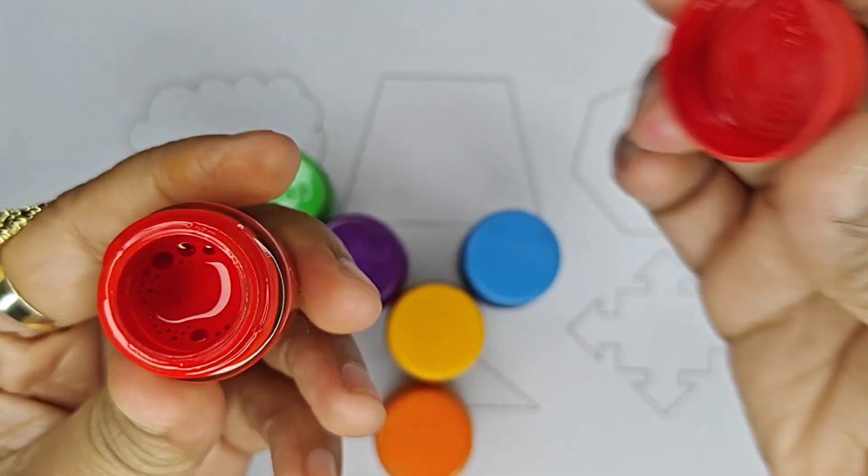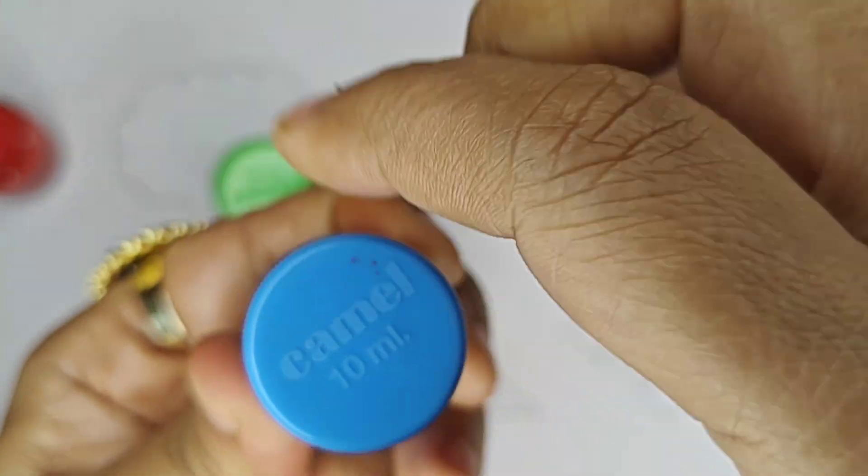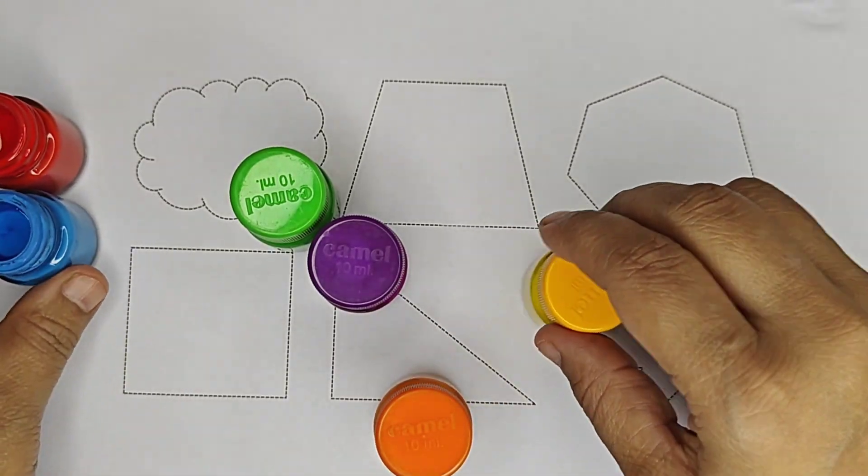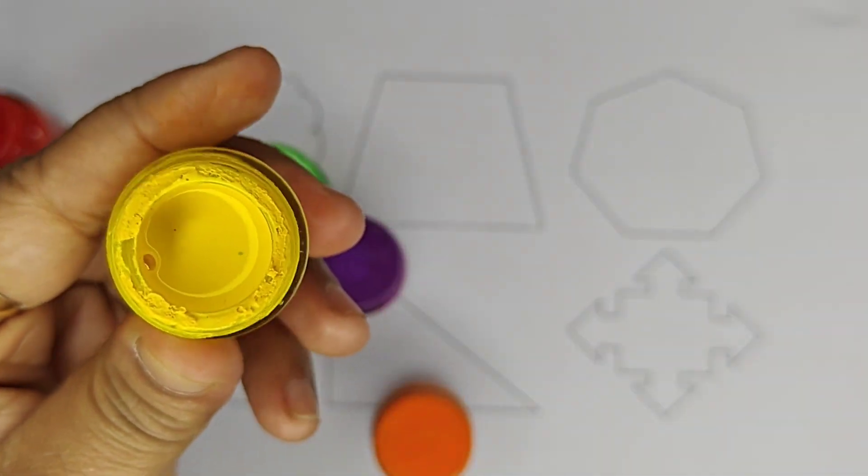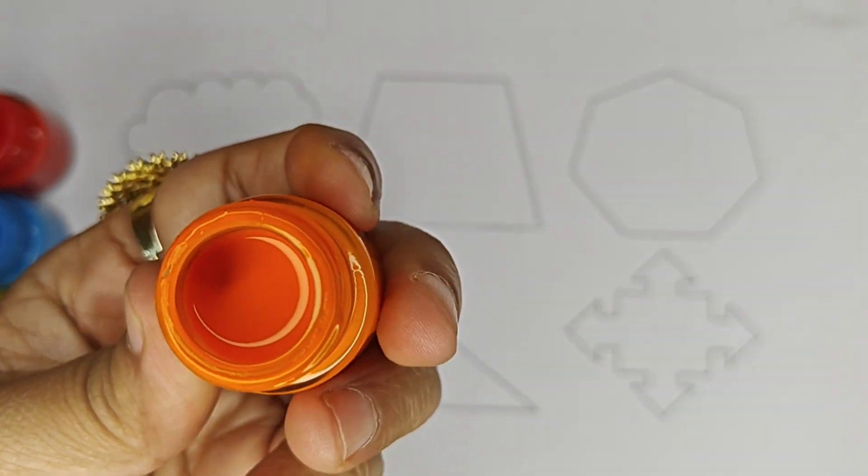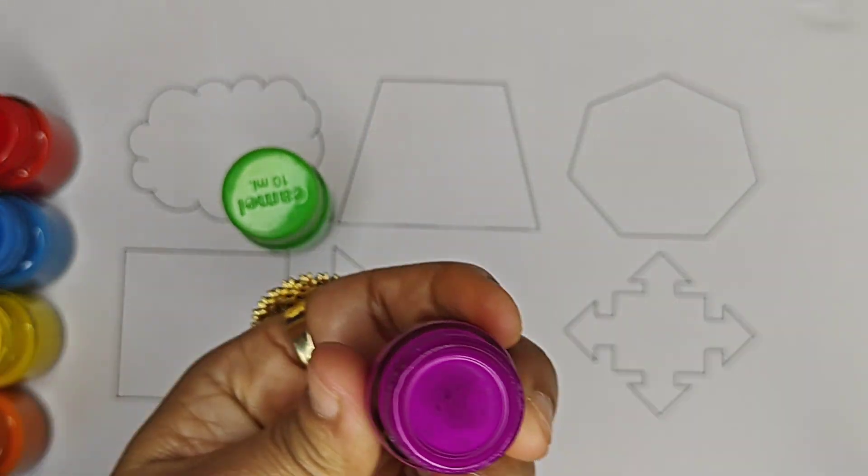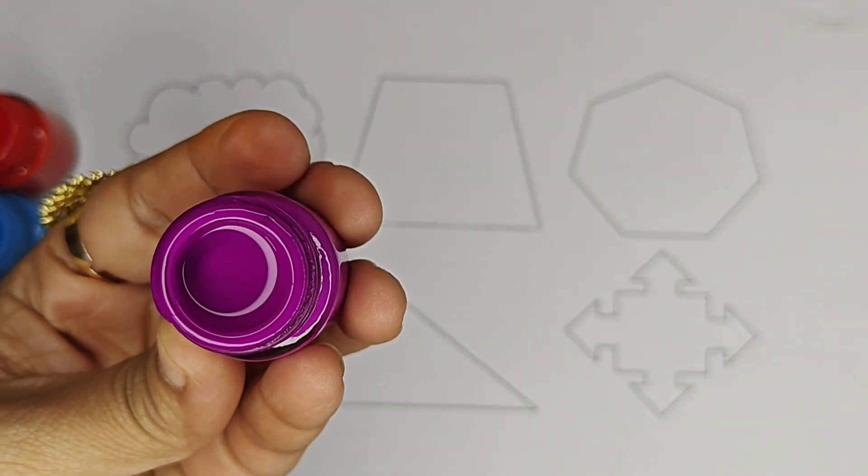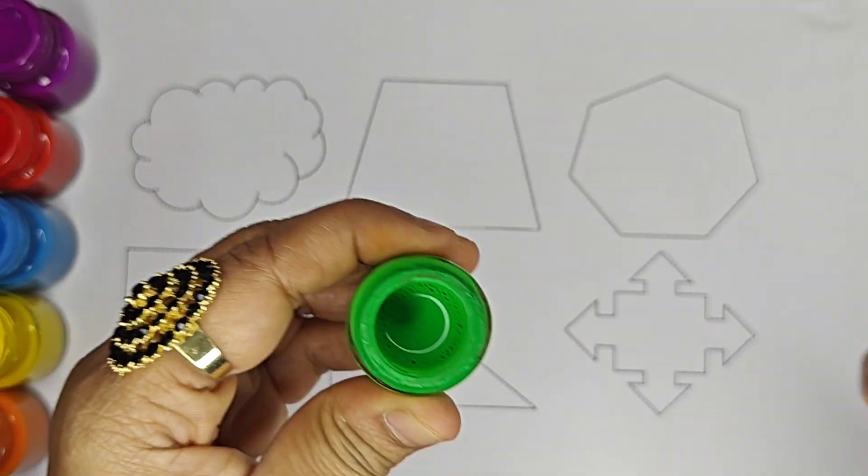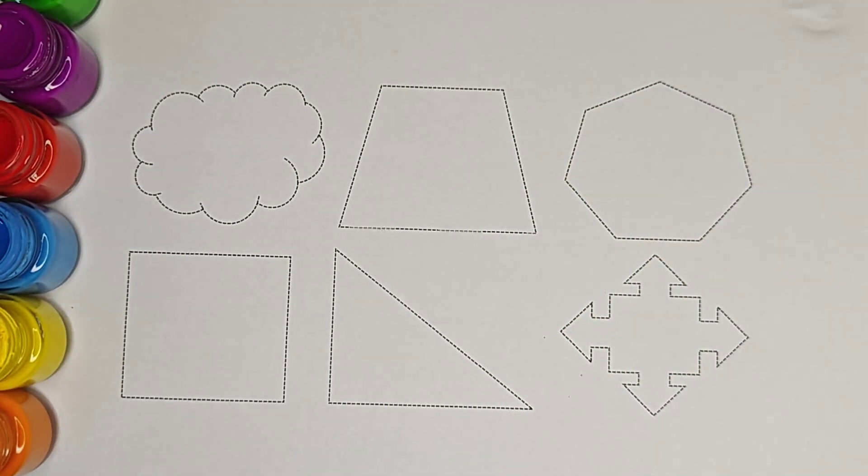This is red color. Red, red, red color. Blue color. Blue, blue, blue color. Yellow, yellow, yellow color. Orange, orange, orange, orange color. Purple, purple, purple color. Green, G-R-E-E-N, green color. This is black color. Let us draw the shapes.